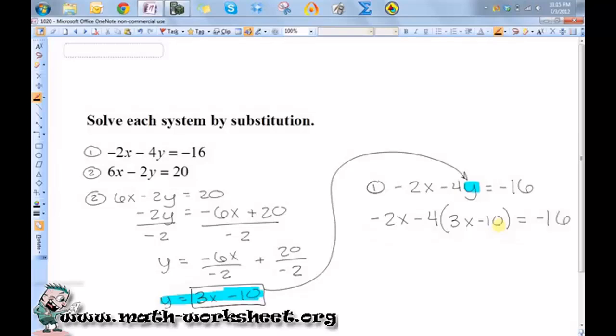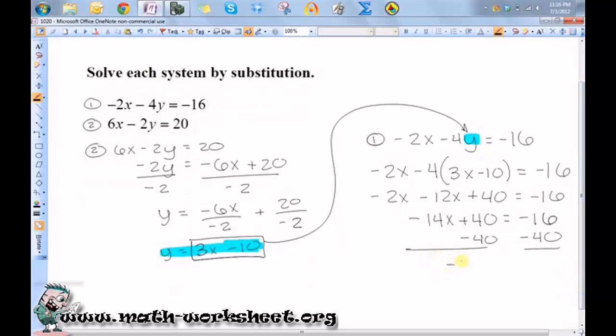Now I have an equation with one variable, and I can solve that for x no problem. So I do negative 2x minus 12x plus 40 equals negative 16, negative 14x plus 40 equals negative 16. Now let's subtract 40 from both sides. That gives me negative 14x equals negative 56. And then I want to divide both sides by negative 14. So x equals 4.